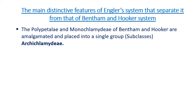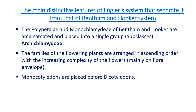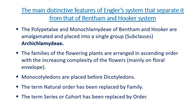The main distinctive features of Engler and Prantl versus Bentham and Hooker's system: the Polypetalae and Monochlamydae of Bentham and Hooker are amalgamated and placed into a single subclass called Archichlamydae. The families of flowering plants are arranged in ascending order with increasing complexity of flowers, mainly floral envelopes. Monocotyledons are placed before dicotyledons. The term 'natural order' has been replaced by 'family,' and the term 'series' or 'cohort' has been replaced by 'order.'